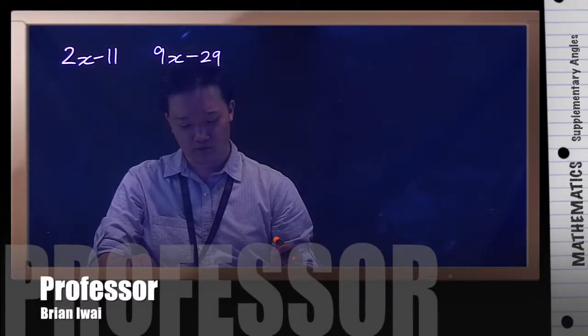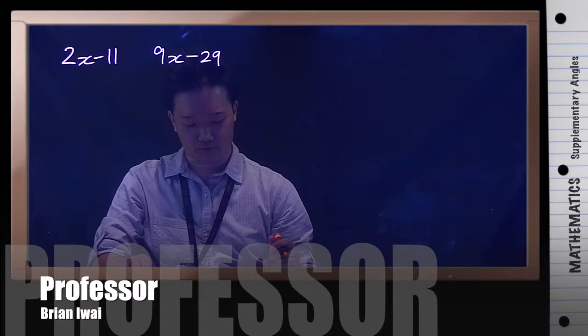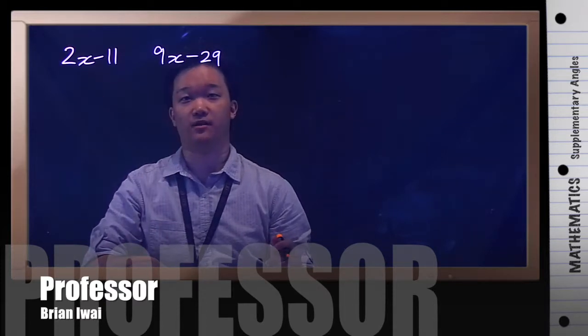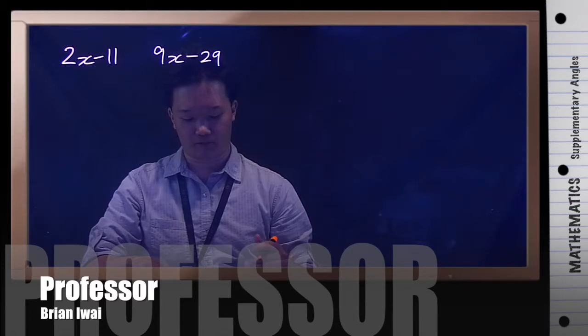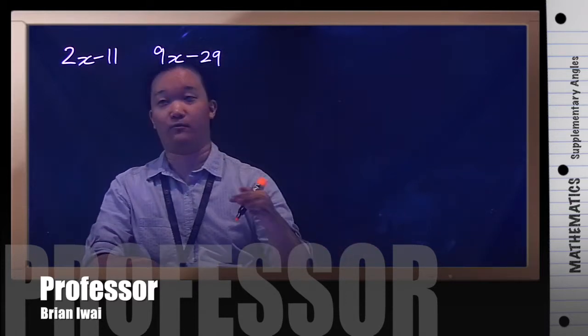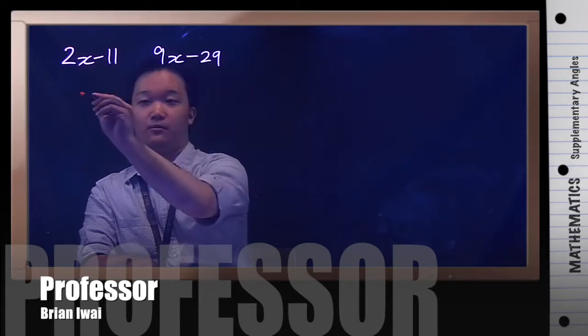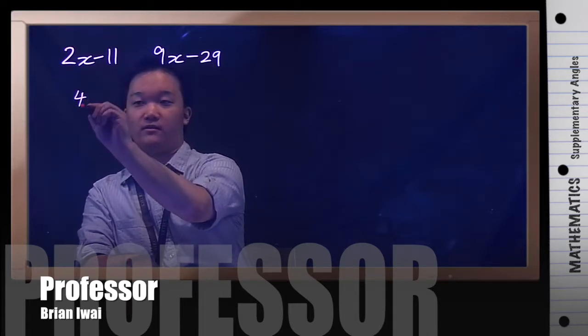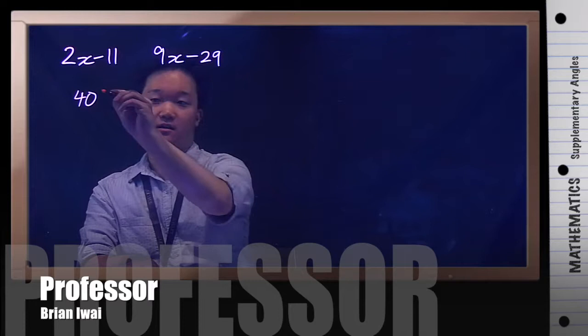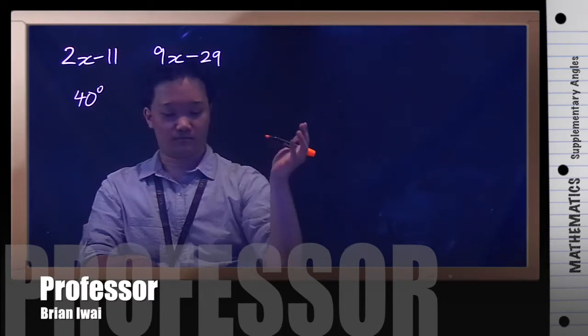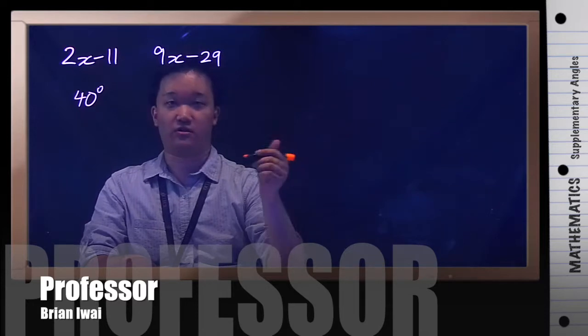In this problem we're going to find the supplementary angles with measures of 2x minus 11 and 9x minus 29. So first off, what is it asking for? This is going to become some number, let's say 40 degrees, and this is going to be another degree that's going to add up to become supplementary angles to each other.